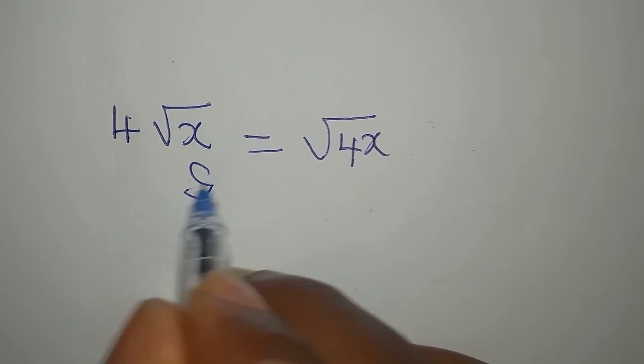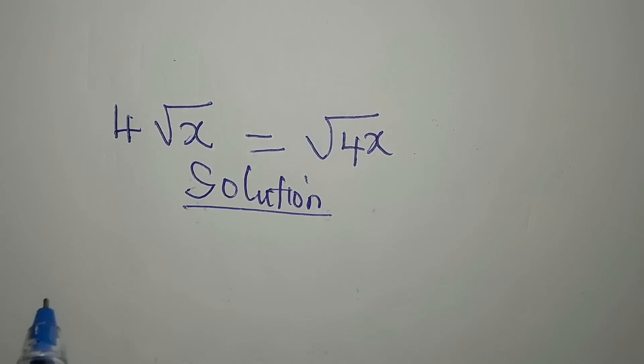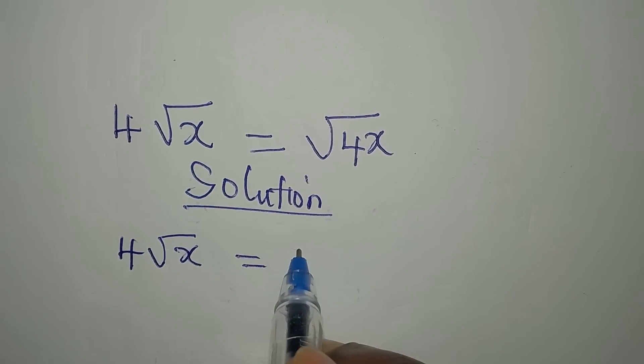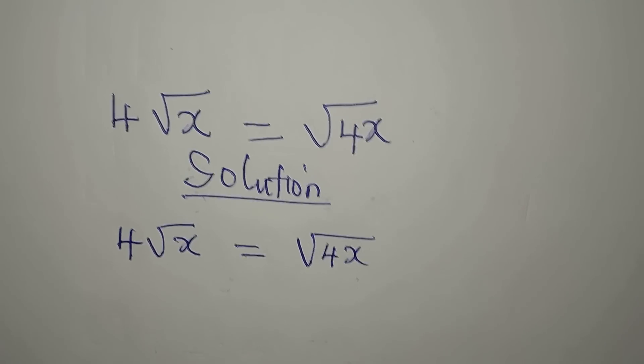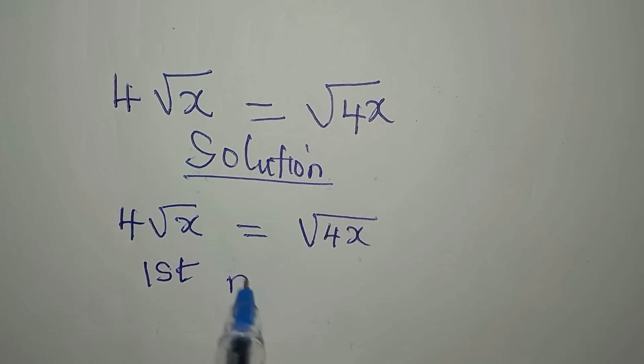Hello everyone, let's provide the solution to this problem. 4 root x equals square root of 4x. I'm going to do this in two ways. Now let's consider the first method.